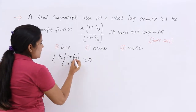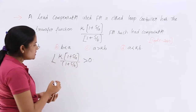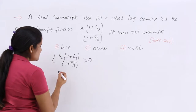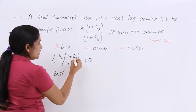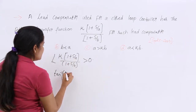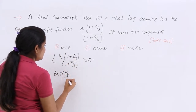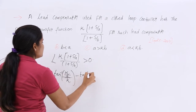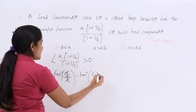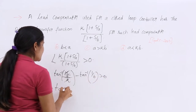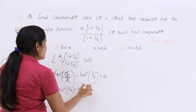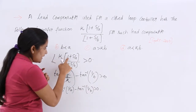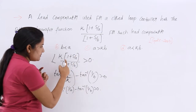Now, how will we calculate that angle? Here you can see K into (1 + S/A). Applying the tan inverse formula — that means tan inverse of (S coefficient divided by constant term) — so this becomes tan inverse (1/A) for the numerator term. When writing the angle for the denominator term, you write minus tan inverse of the same form.